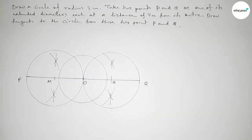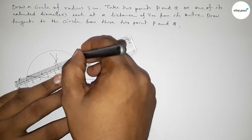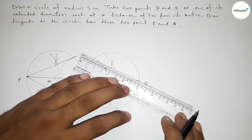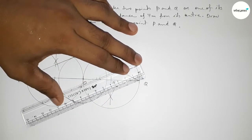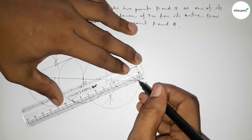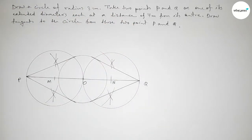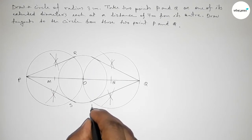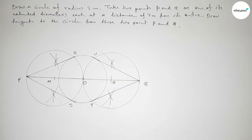Joining from this intersection — this is one tangent from point P. Joining this line — this is also a tangent from point P. Similarly, joining this line — this is a tangent from point Q to the circle. Joining this line — also a tangent from point Q to the circle of radius 3 centimeters. Taking points here: R, S, T, and U.